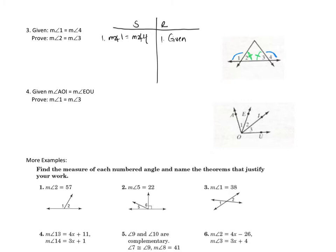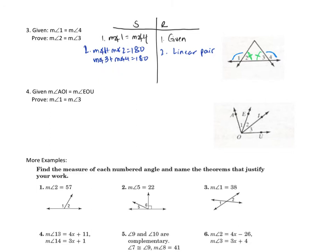For step 2, the measure of angle 1 plus the measure of angle 2 equals 180, and the measure of angle 3 plus the measure of angle 4 equals 180 — and this was because they are a linear pair. Since both expressions equal 180, I'm going to set them equal to each other: the measure of angle 1 plus angle 2 equals the measure of angle 3 plus angle 4. This was a substitution step.